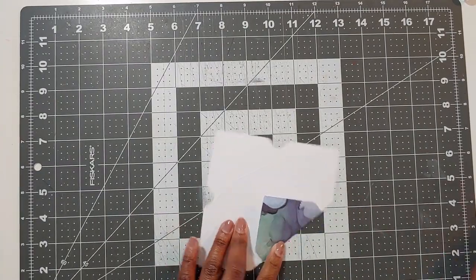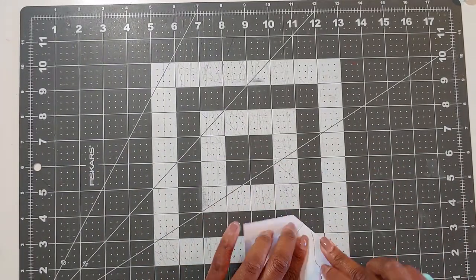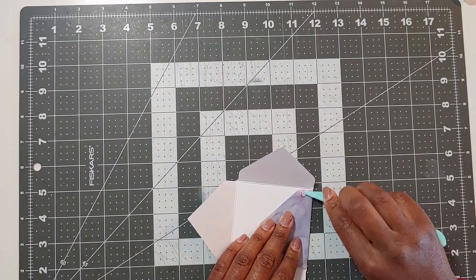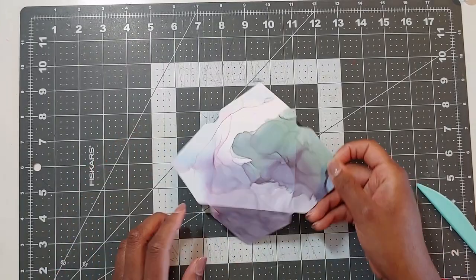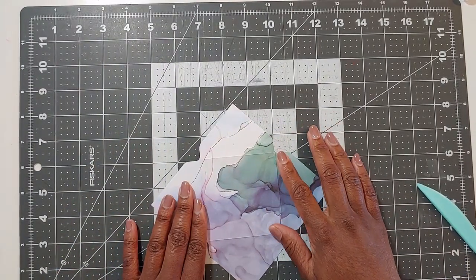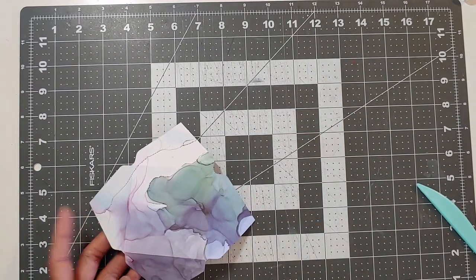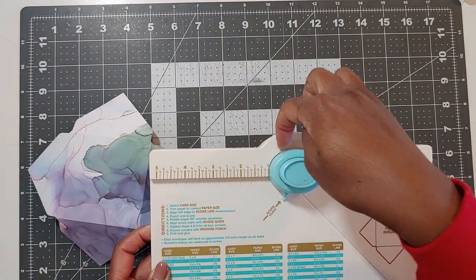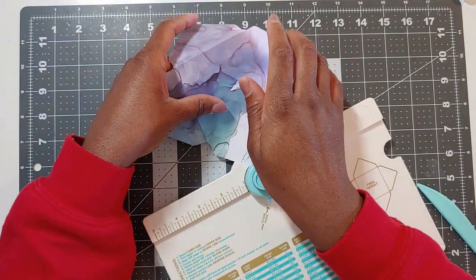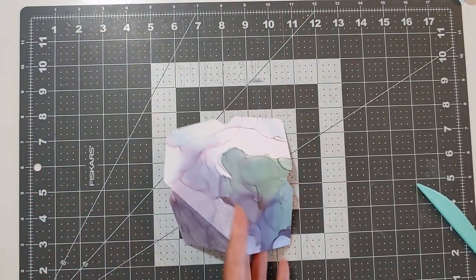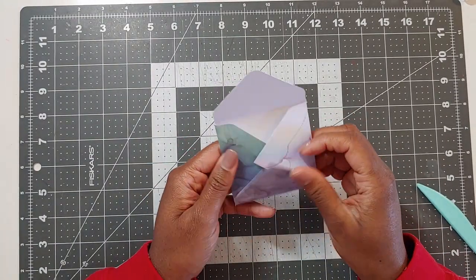And so the next step is to fold up my envelopes. Whenever I'm mass producing like this I try to do all the similar steps at the same time. So I cut all the papers, I scored all the papers and now I'm going to glue all of the envelopes. So I'm just looking to see what I want the top of the envelope to be and I like that there. So I'm going to use my envelope punch board to round the top and the bottom corners. You don't have to do this, I just think it gives it a nice clean look.